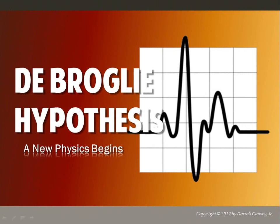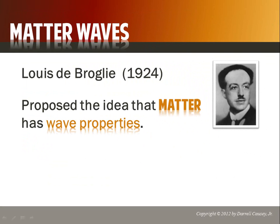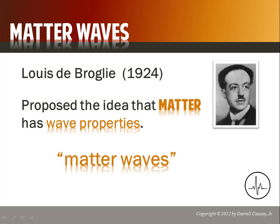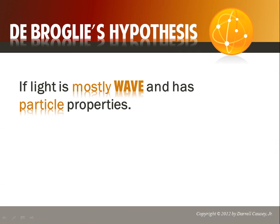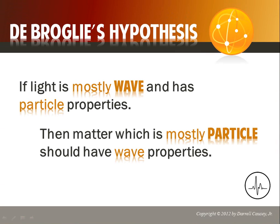De Broglie's hypothesis marks the beginning of a new physics. De Broglie stated that there's a thing called matter waves, and he had no proof of this. He believed that nature is balanced — so if waves have properties that are like matter or have particle properties, then matter, which is mostly particle, should have wave properties. He proposed this without real empirical proof, though he did develop a mathematical proof and proposed it as his doctoral thesis. His idea that just because light is mostly wave and has particle properties, matter which is mostly particle should have wave properties — this didn't go over with his teachers, and they refused his doctoral thesis.